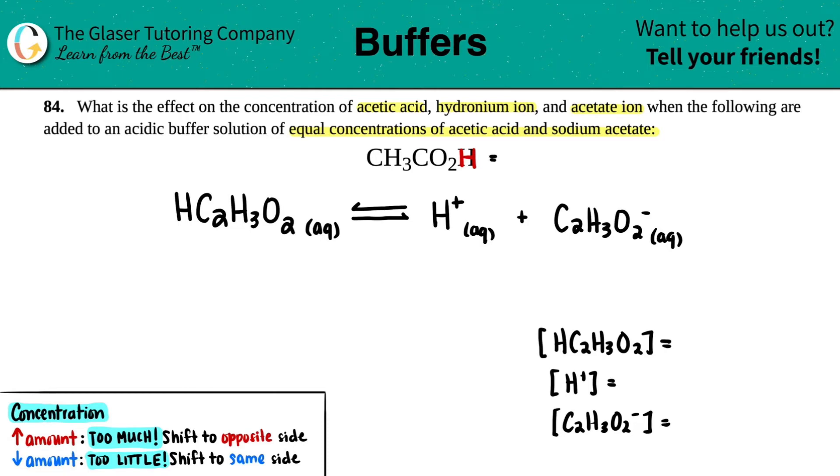So if I rearrange this, I'll have the H in front and then I'll group the rest of the elements together. So I have two carbons, a remainder of three hydrogens, and two oxygens. So this is acetic acid.